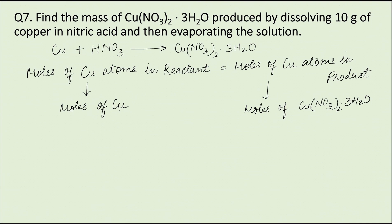One mole of copper in the reactant contains one mole of copper atoms, therefore moles of copper atoms in the reactant equals moles of copper. And one mole of copper nitrate trihydrate in the product contains one mole of copper atoms, therefore moles of copper atoms in the product equals moles of copper nitrate trihydrate.